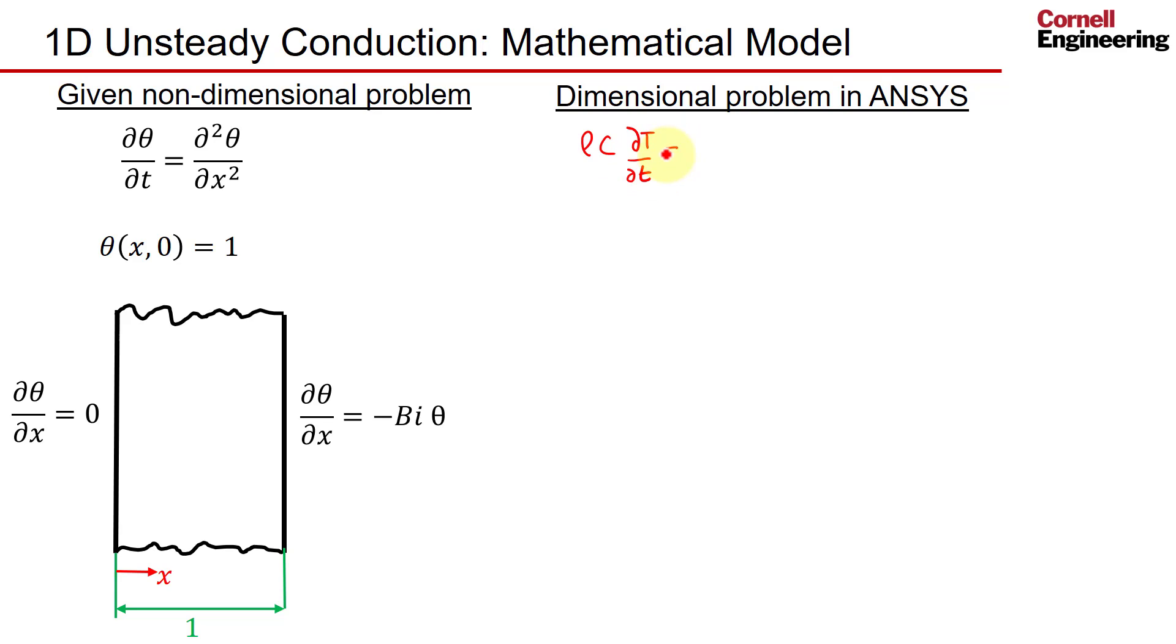...the derivative of temperature with respect to time equals K times d²T/dx². ANSYS is going to solve this in 2D, so we have the derivative with respect to y² as well, and we need to make sure that is zero. The given problem is 1D, but in ANSYS you can solve 2D or 3D problems. We solve this as 2D.